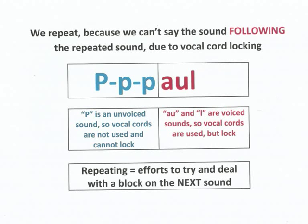Let's look at an example. Say for instance your name is Paul. Most people tend to focus on the repeated sound, as in 'p-p-Paul,' so they think the problem lies with the 'p.' But very often the real problem lies with the sound following the repeated sound. The repeated sound can actually be spoken, so that's not the problem — it's the next sound which you can't say because your vocal cords have locked. In this case the real problem is with the voiced 'or' sound; repeating the 'p' is just this individual's way of trying to overcome the block.